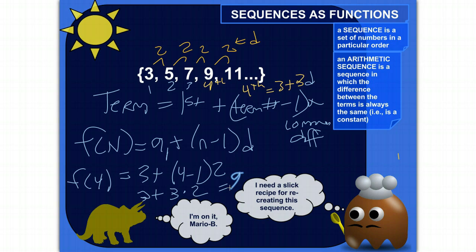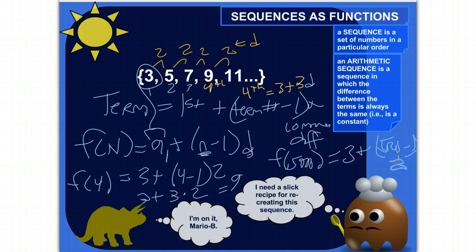And this function will work for any term in the sequence, in this sequence. And you can actually substitute in the values for any arithmetic sequence. So here you put the term that you start with, here is the number of the term you're looking at, and here is the common difference. So if I wanted to find the 5,000th term, I would just do F of 5,000 is equal to the first term plus the term number, 5,000 minus 1 times the common difference of 2. So I would do 4,999 times 2 plus 3, and that would be the value of the 5,000th term, much quicker than adding it all up by hand.